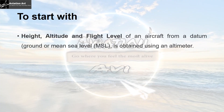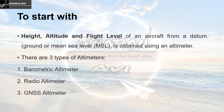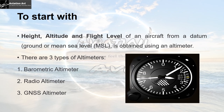To start with, height, altitude, and flight level of an aircraft from a datum — which may be the ground or the mean sea level — is obtained in an aircraft using an altimeter. There are three types of altimeters: the barometric altimeter, the radio altimeter, and the GNSS altimeter. Here we will focus on the barometric altimeter and the datums set using QNH, QFE, and QNE.